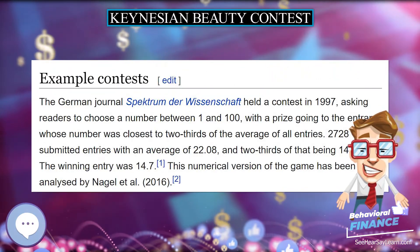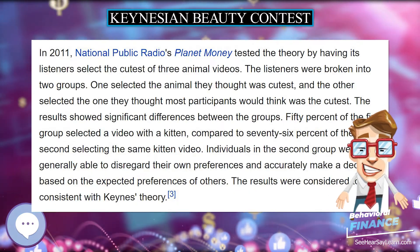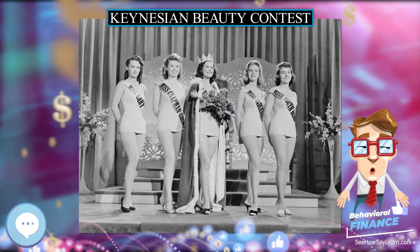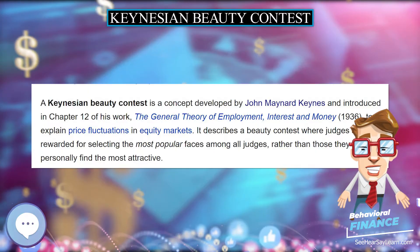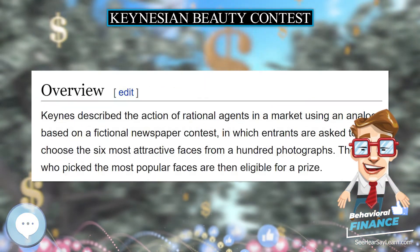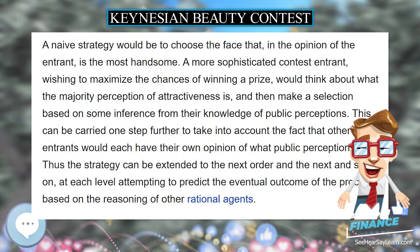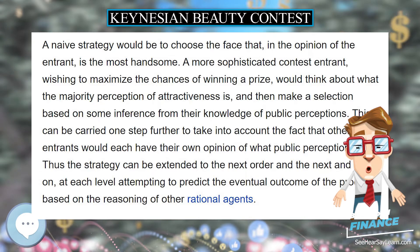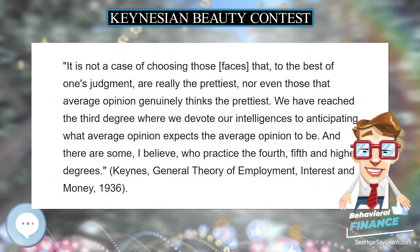This can be carried one step further to take into account the fact that other entrants would each have their own opinion of what public perceptions are. Thus the strategy can be extended to the next order and the next and so on, at each level attempting to predict the eventual outcome of the process based on the reasoning of other rational agents. Keynes believed that similar behavior was at work within the stock market. This would have people pricing shares not based on what they think their fundamental value is, but rather on what they think everyone else thinks their value is, or what everybody else would predict the average assessment of value to be.